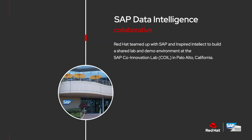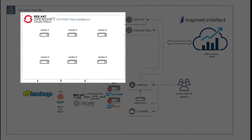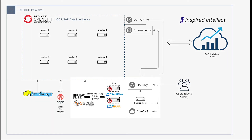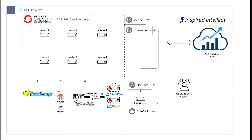Red Hat teamed up with SAP and Inspired Intellect to build a shared lab and demo environment at the SAP Co-innovation Lab, or COIL, in Palo Alto, California. We've installed Red Hat OpenShift with SAP Data Intelligence on a cluster of six servers, with Red Hat OpenShift container storage for block and object storage. We have S4 HANA and HANA running on Red Hat virtualization, and use SAP-certified solutions from Red Hat Fuse and 3Scale as part of our Red Hat integration portfolio.